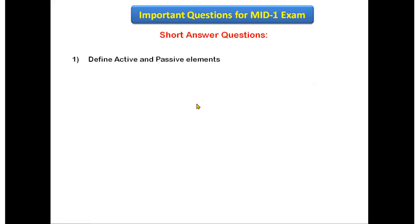Now the short answer questions. First: define active and passive elements. You have to define what is an active element and what is a passive element, and write the examples. For each and every answer you need to draw the diagram — without a diagram you will not get marks.